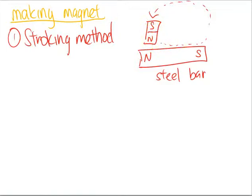For example, when the north pole reaches here, let's use an orange color. The bar becomes like this. When it leaves, it creates a south pole here.